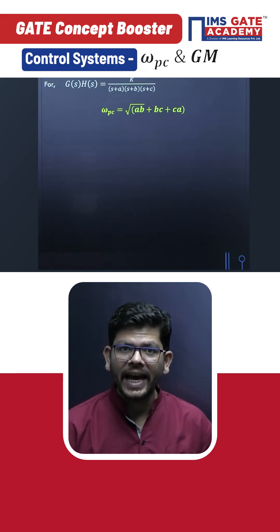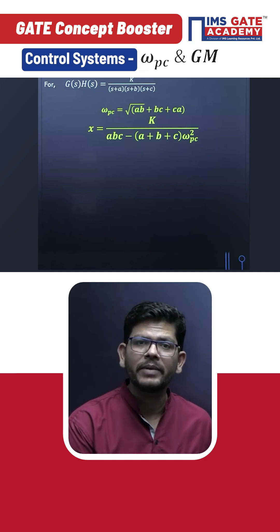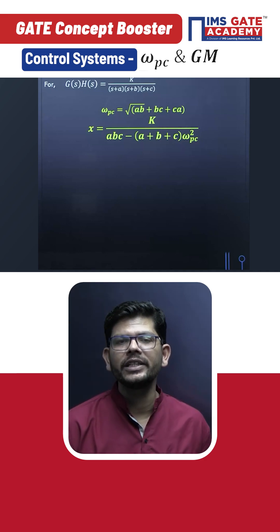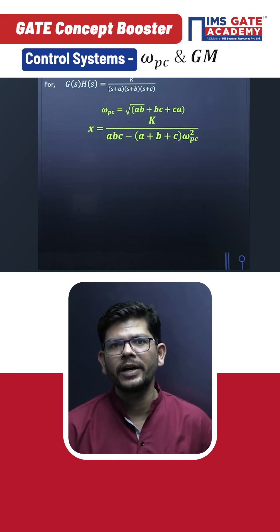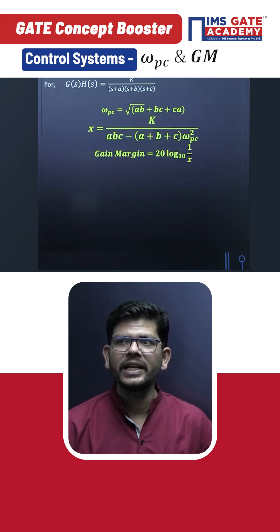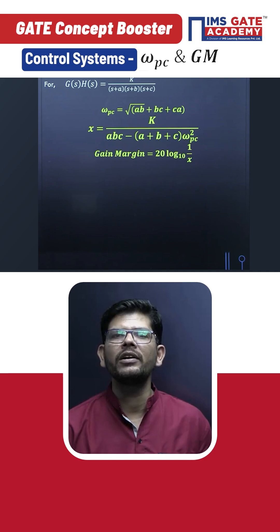Then the phase crossover frequency is under root of ab, bc, and ca, and then you can calculate the value of x. The intercept at the negative real axis by using this formula: k upon abc minus (a+b+c) times omega pc square. And after that, you can calculate the gain margin by doing 20 log (1 by x).